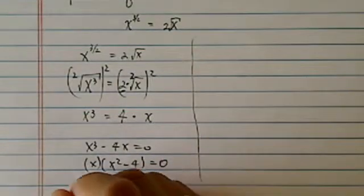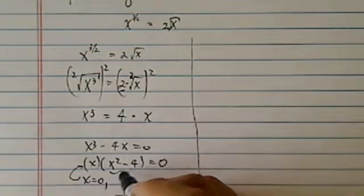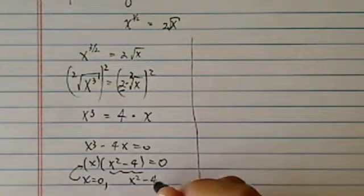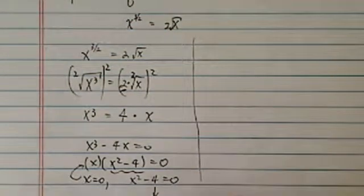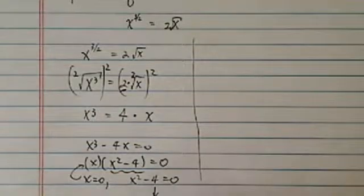I have x squared minus 4 equal to 0. So therefore, x equal to 0. That's if you set this term equal to 0. For this one, x squared minus 4 equal to 0, you have two solutions: x equal to positive 2, x equal to minus 2.